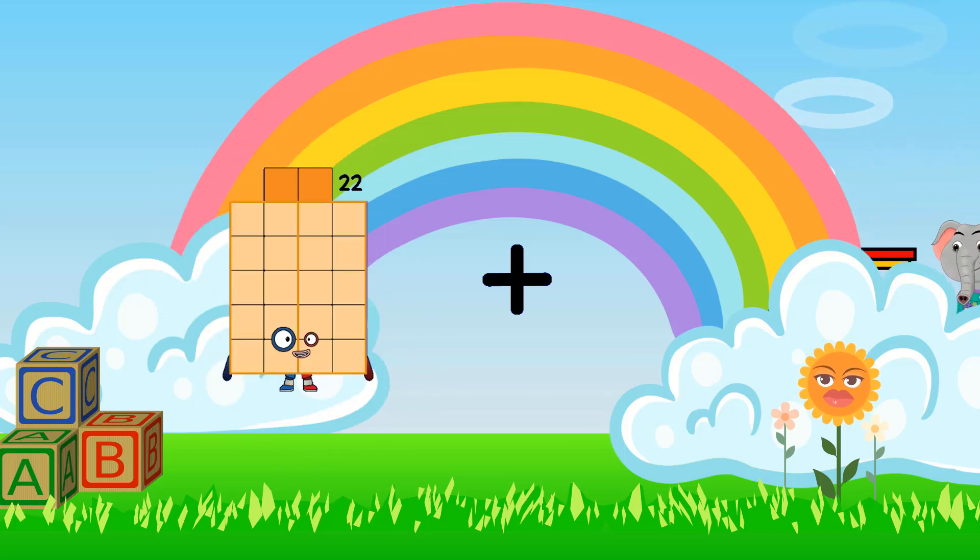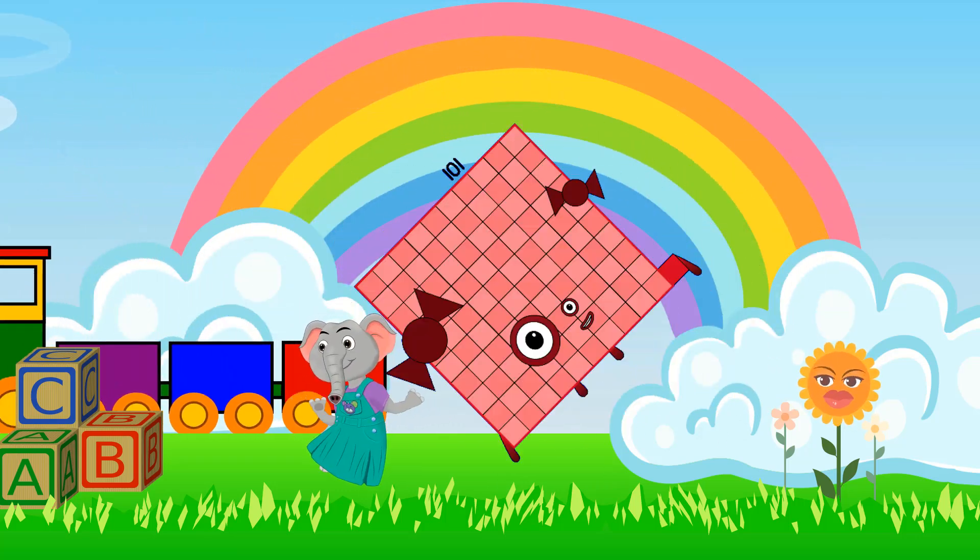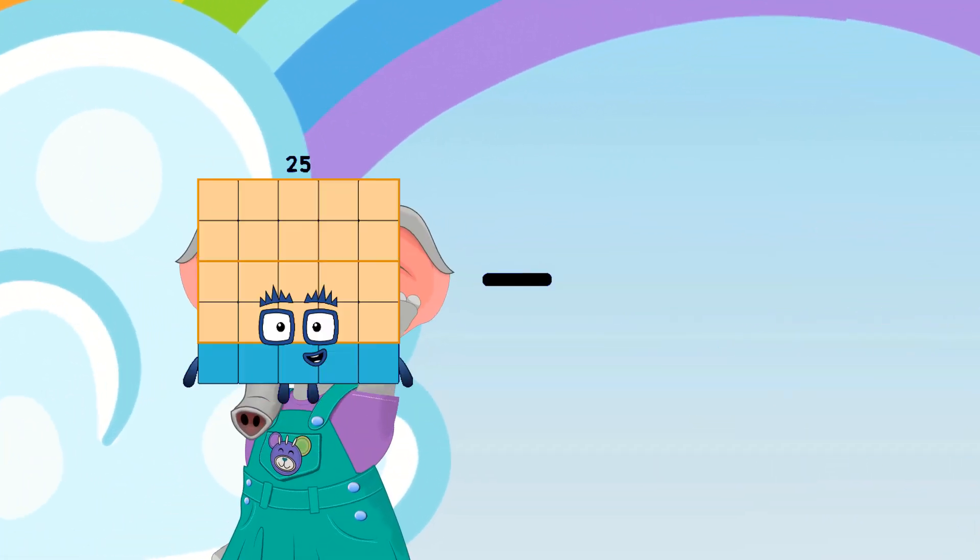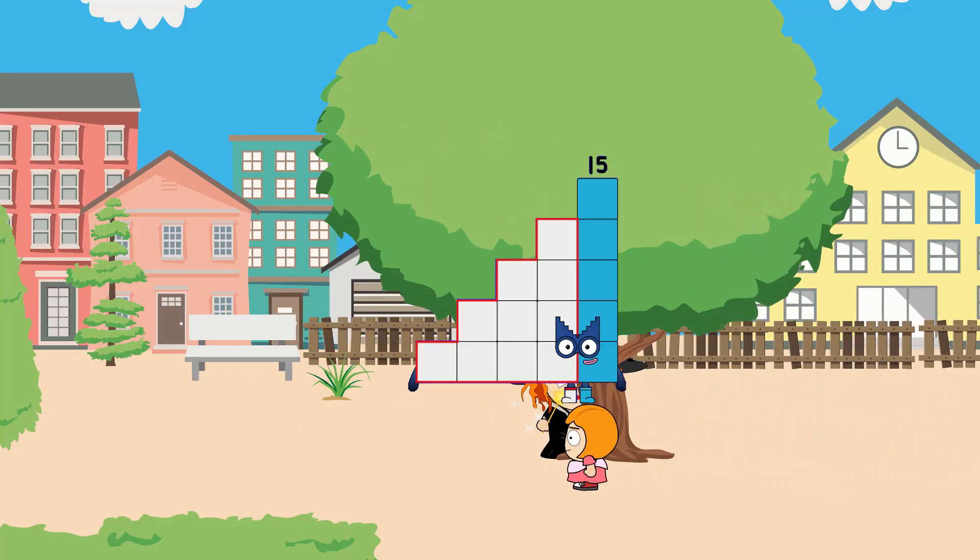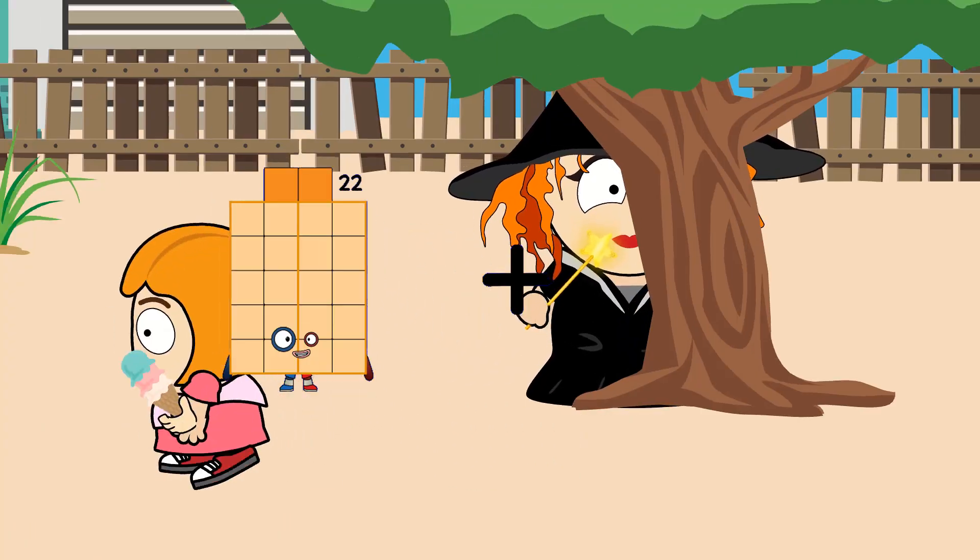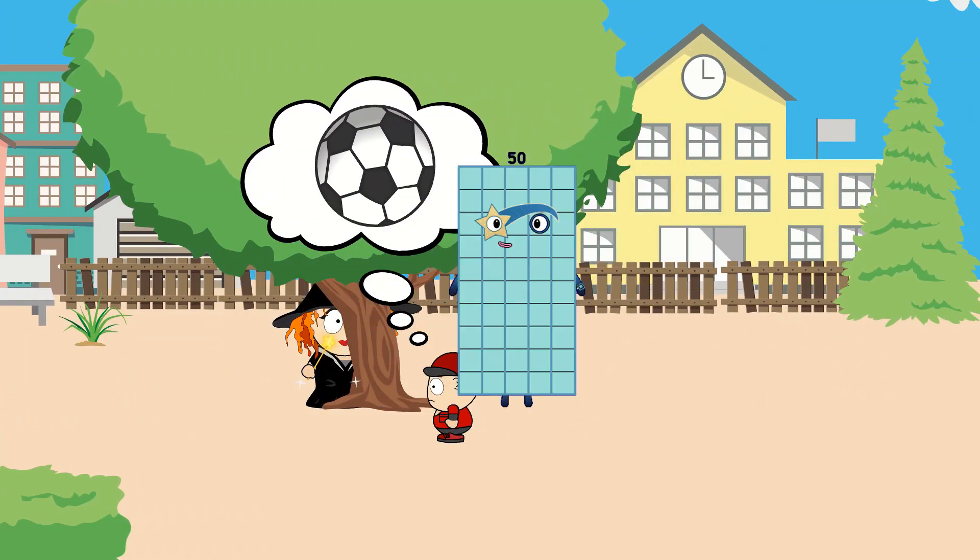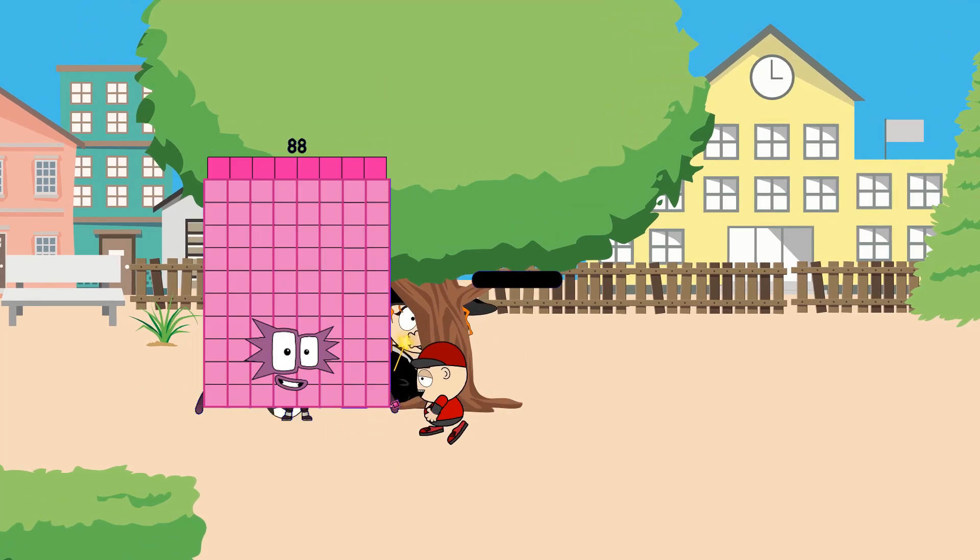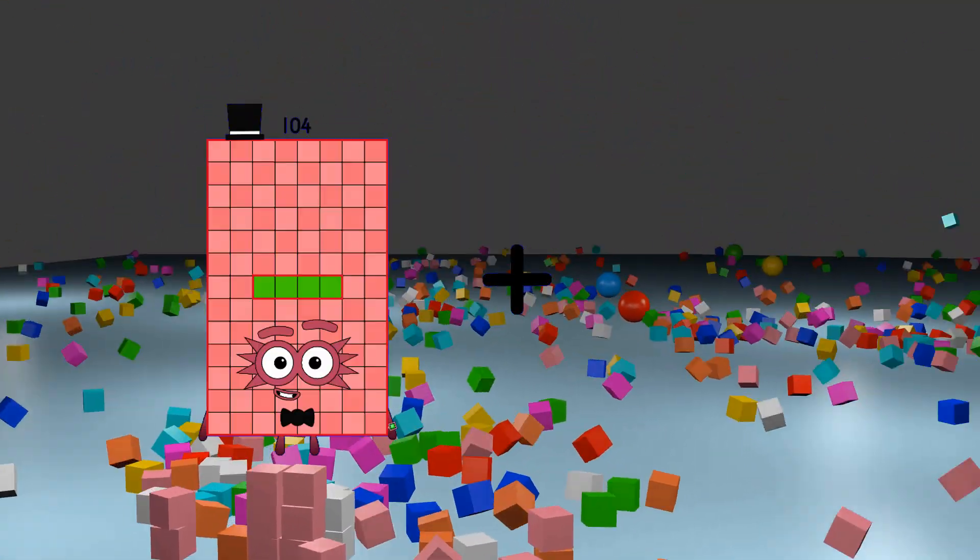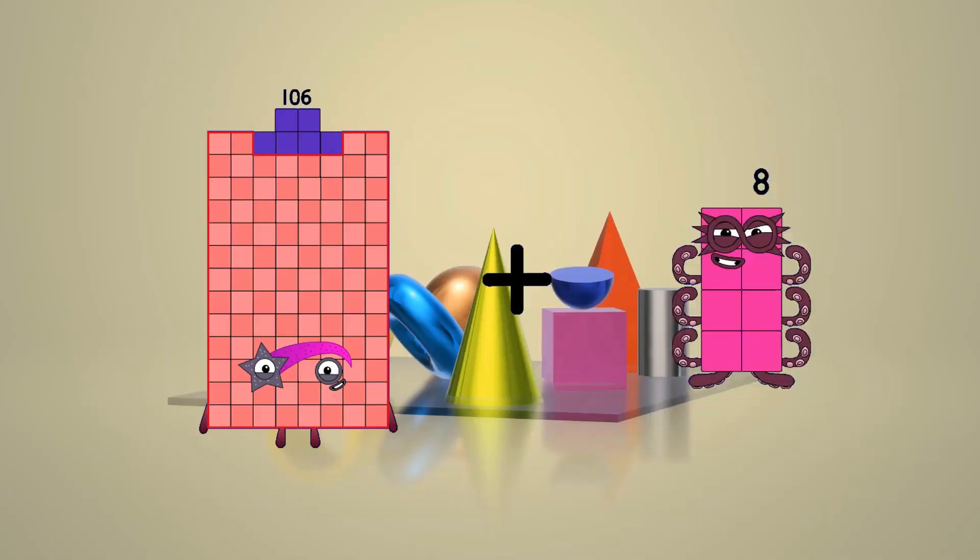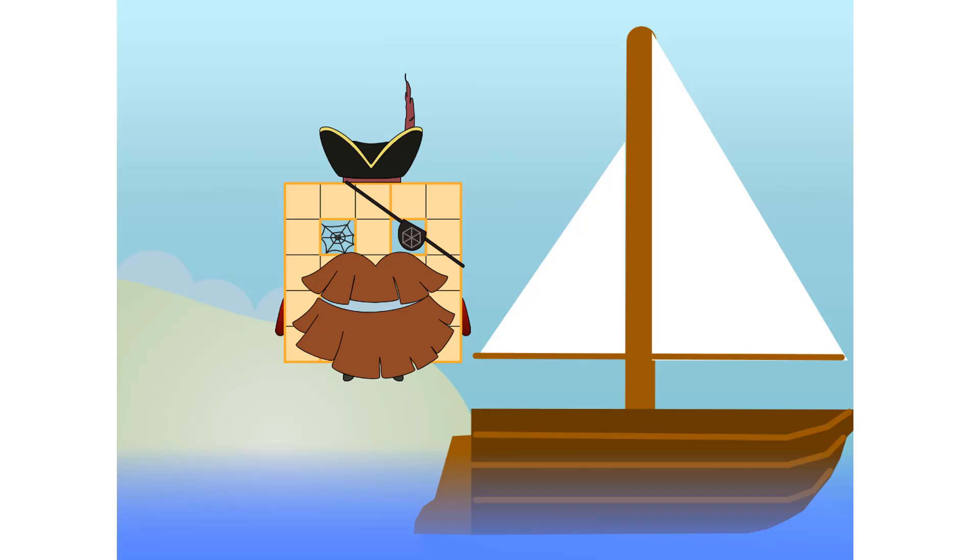22 plus 79 equals 101. 25 minus 10 equals 15. 22 plus 28 equals 50. 88 minus 5 equals 83. 106 plus 88 equals 194.